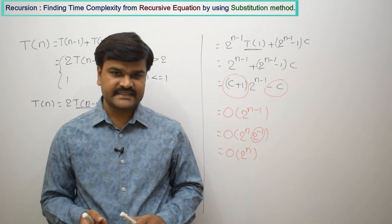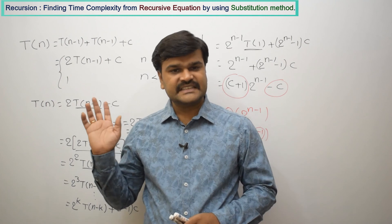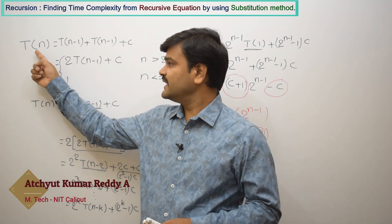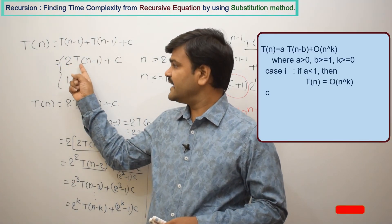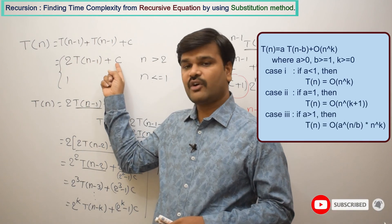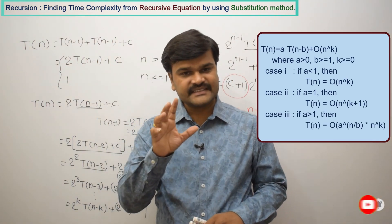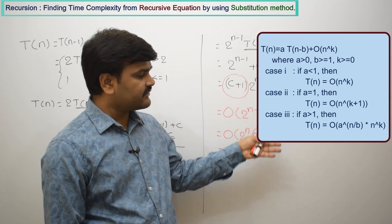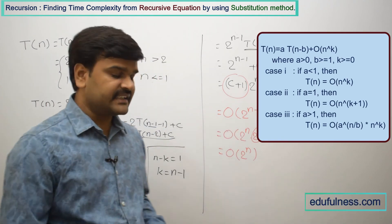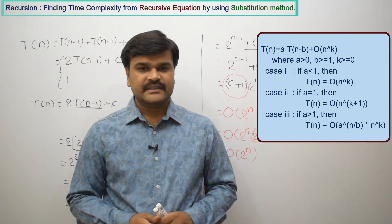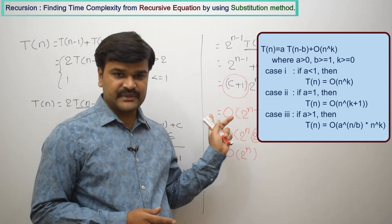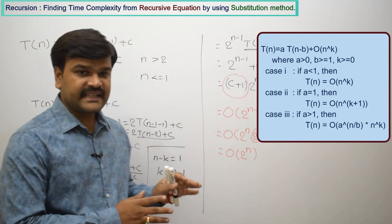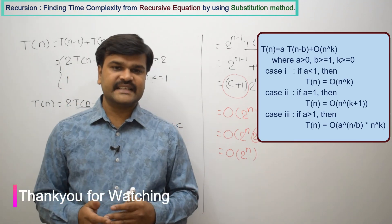This is exponential time complexity: O(2^n). For this type of problem, there is a shortcut. Whenever a recursive equation is in the form T(n) = a·T(n-b) + O(n^k), we have three cases to find time complexity directly: Case 1 — if a < 1: T(n) = O(n^k); Case 2 — if a = 1: T(n) = O(n^(k+1)); Case 3 — if a > 1: T(n) = O(a^(n/b) · n^k). In the worst case this method will help you, or you can remember these cases. Understanding this will give you more insights about the concept.